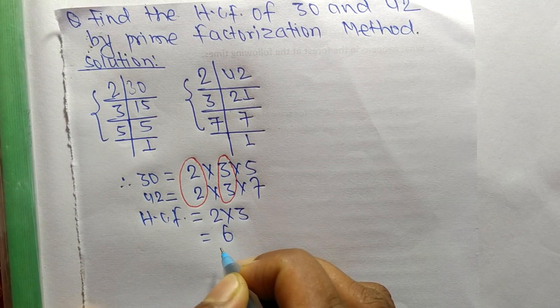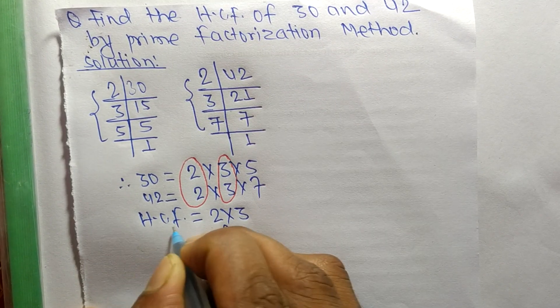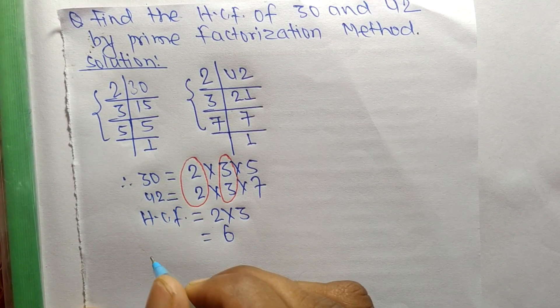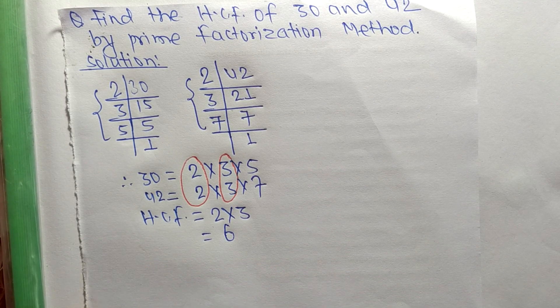So 6 is the HCF of 30 and 42. That's all for today and thanks for watching.